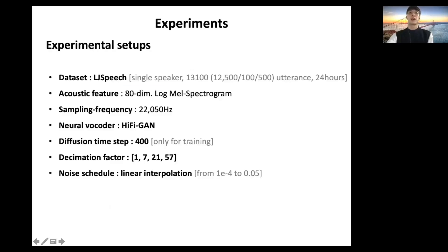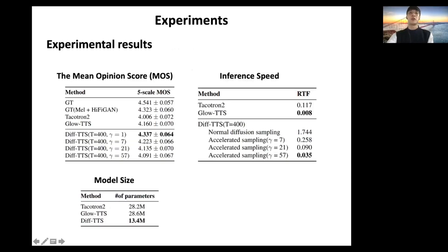The experimental results are as follows. Diff-TTS shows the highest mean opinion score at timestep 400 even with fewer parameters. On the other hand, a lower MOS was obtained with gamma equals 57, but the degradation is not significant.